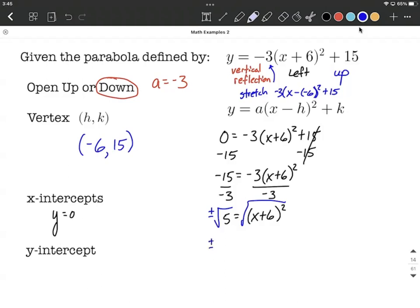So now we have plus or minus the square root of 5 equals, remember we applied the square root to cancel out the square, x plus 6 on the right-hand side. To isolate x, to get it all by itself, we want to subtract 6 from both sides.